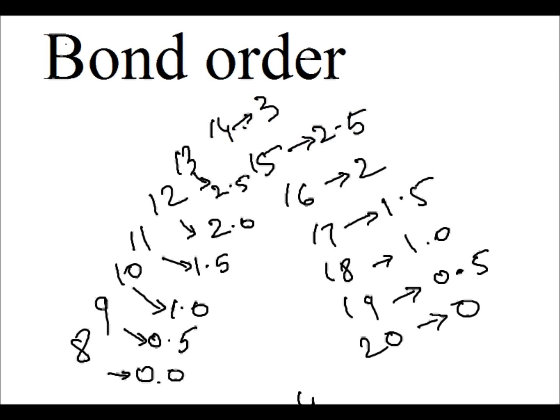How to find bond order in 1 minute. Here is a simple trick: First of all, find number of electrons. If number of electrons is 14, then bond order will be 3.